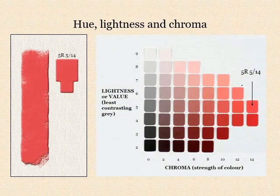One way to specify hue, lightness, and chroma more precisely is by the notation of the corresponding colour chip from the Munsell Book of Color — in this case 5R 5/14, which means a Munsell hue of 5R, a Munsell value or lightness of 5, and a Munsell chroma of 14.